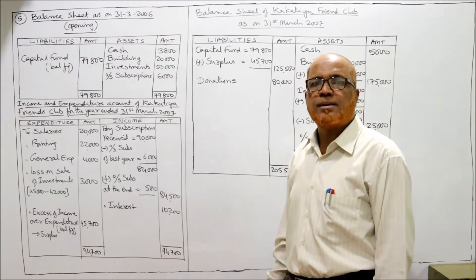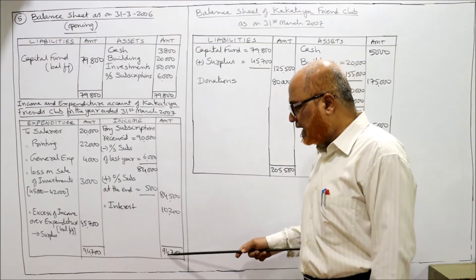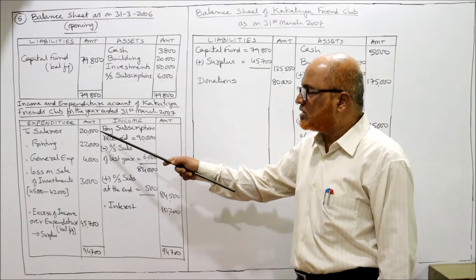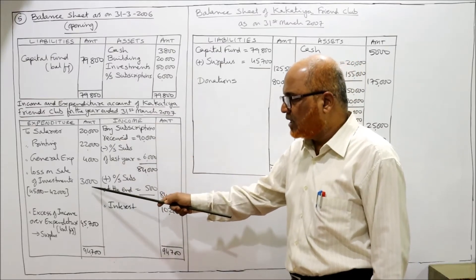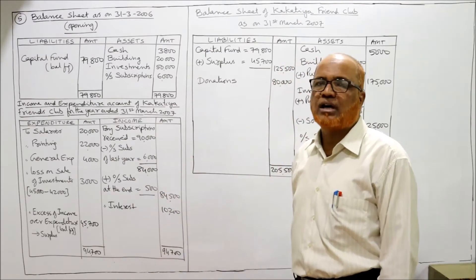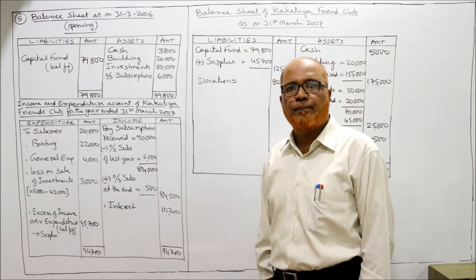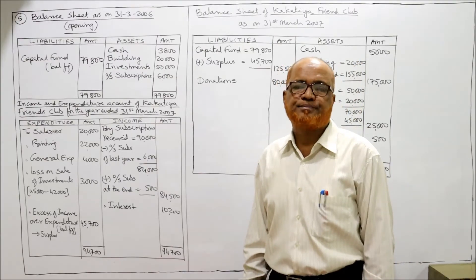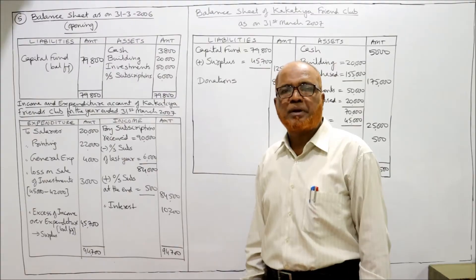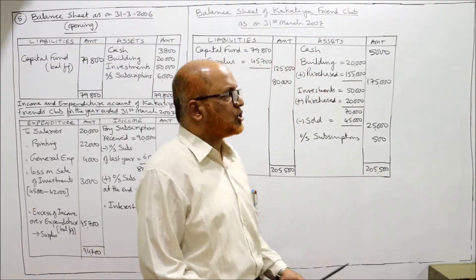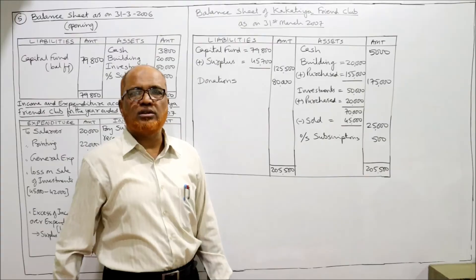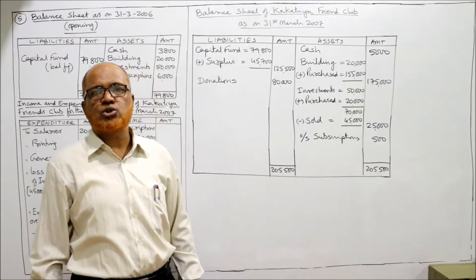Having taken all items, the credit side total is 94,700. Subtracting the four expenditure items gives a balancing figure of 45,700 — this is the surplus, i.e., excess of income over expenditure. Now we prepare the balance sheet of Kakatiya Friends Club as on 31st March 2007.